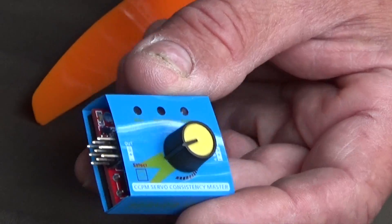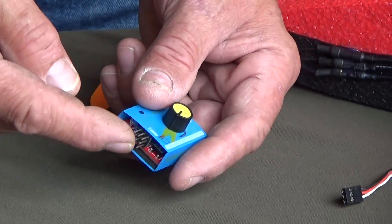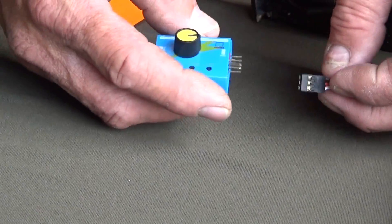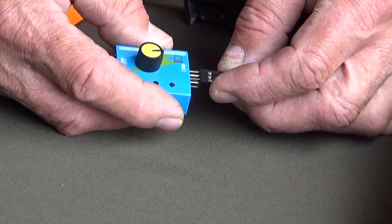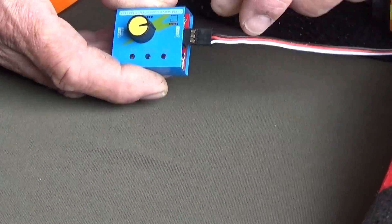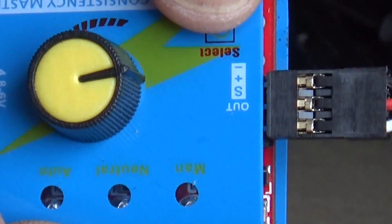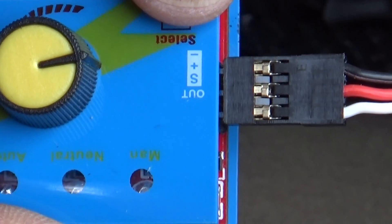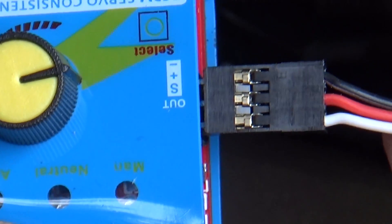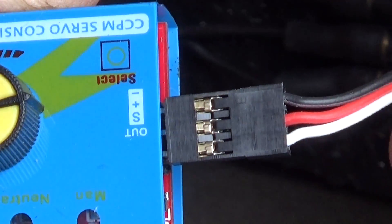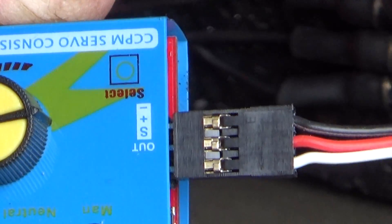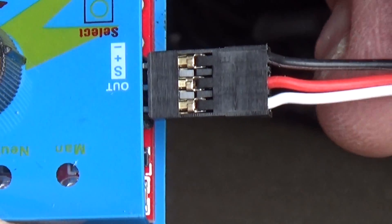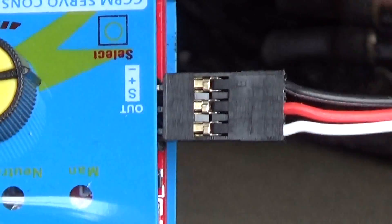We're going to power it up on the output side with the speed controller power. As you can see, I've got my signal wire on the port that's marked S and then you have a positive and negative. Your signal wire is usually your lightest colored wire on your servo wire and then the red is always positive and the black is always negative.